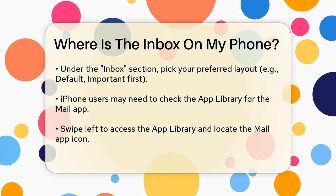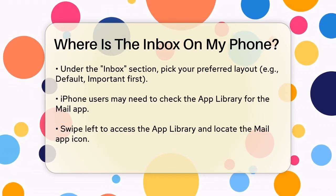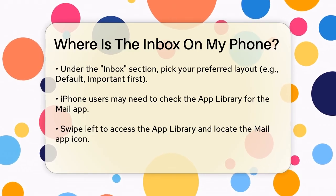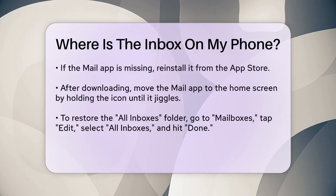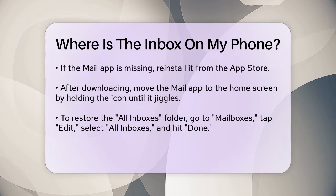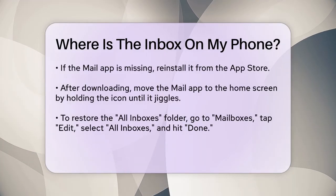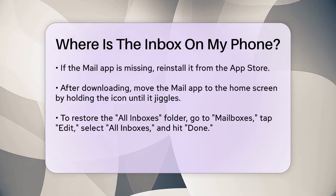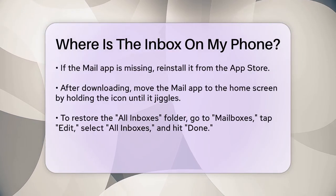Once downloaded, you can move the app to your desired home screen by touching and holding the app icon until it jiggles, then dragging it to the desired location. Once you have the Mail app back on your iPhone, you can access your inbox by opening the app. If you're missing the All Inboxes folder, you can restore it by going to the Mailboxes section, tapping Edit, selecting the circle next to All Inboxes, and then tapping Done.